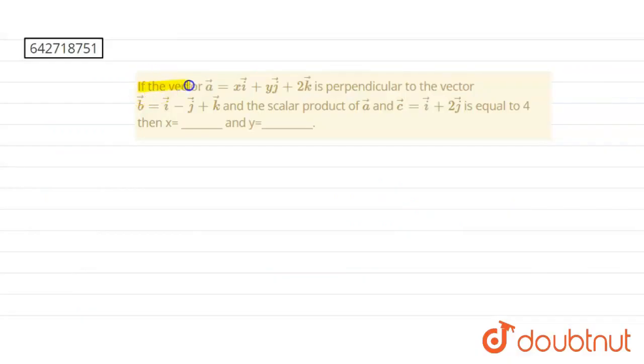So the given question is, if the vector A is equal to xi plus yj plus 2k, which is perpendicular to the vector B, the vector B is i minus j plus k, and the scalar product of A and C, where C equals i plus 2j is equals to 4. So then x is equals to and y is equals to.